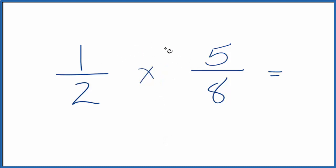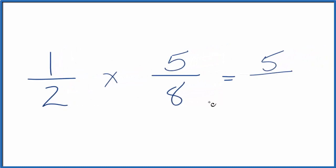So now we have one times five, we multiply the numerators, and then we multiply the denominators. Two times eight is 16. So one half of five eighths is 5 sixteenths.